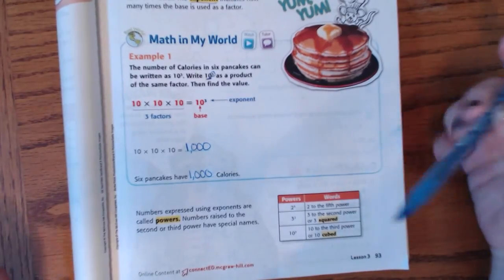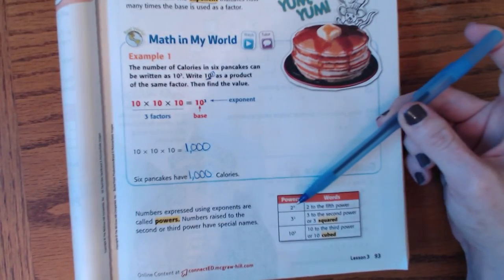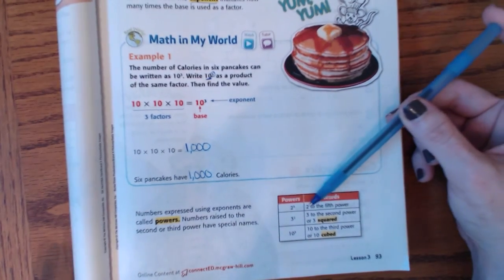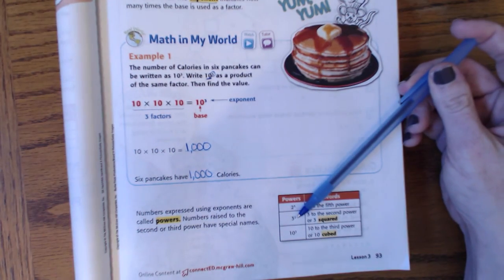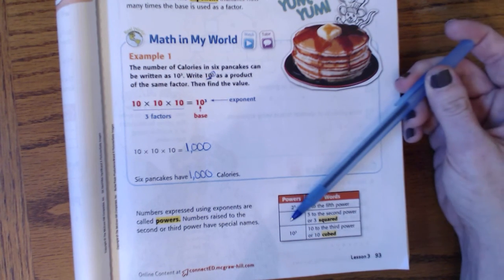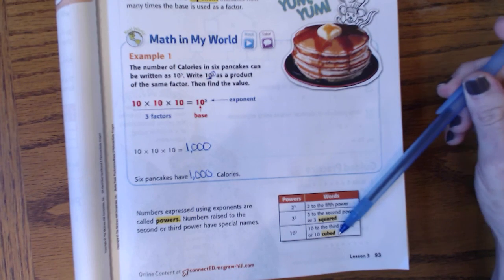Now, there are some numbers that have special names. If I have a two with a five in the corner, that is literally said two to the fifth power, like I said with the three up here. If you have a two in the corner, that special name is squared. We say that this is three squared.